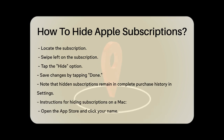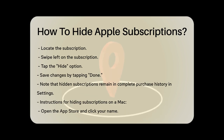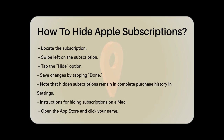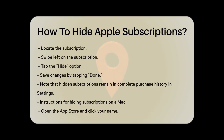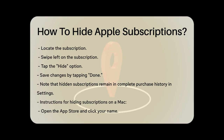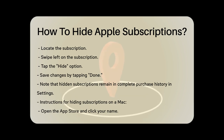Find the subscription you want to hide, swipe left on it, and then tap the Hide option. After you've hidden the subscription, tap Done to save the changes. This will remove the subscription from your visible purchase history, but it will still appear in your complete purchase history and settings.